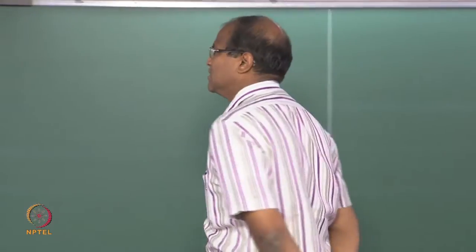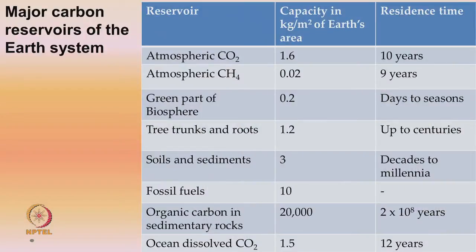We saw this viewgraph in the last class, showing the major carbon reservoirs of the earth system. We listed atmospheric carbon dioxide, methane, biosphere, trees, earth's crust, fossil fuels, and so on. The carbon in fossil fuel is about 10 kilograms per meter square of earth's area. Earth's area is 4πr_e², where r_e is 6.37 × 10⁶ m.